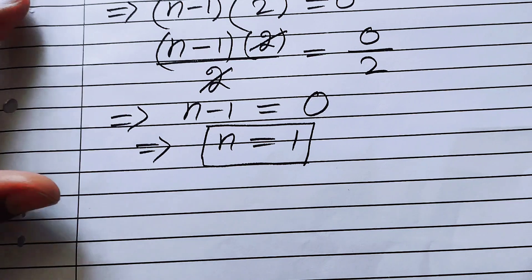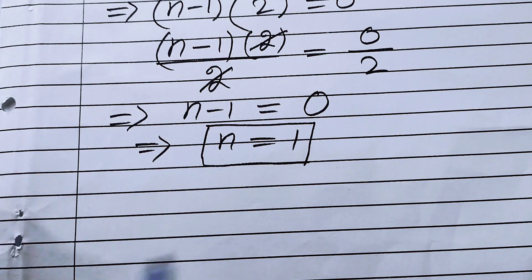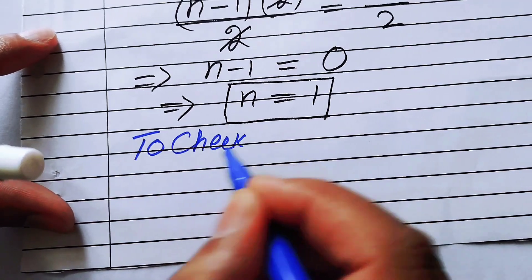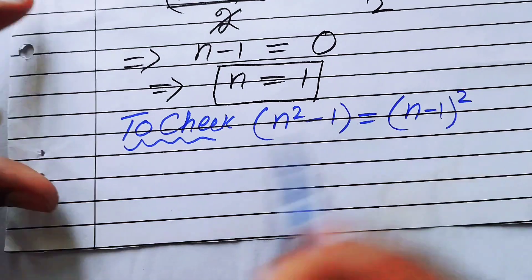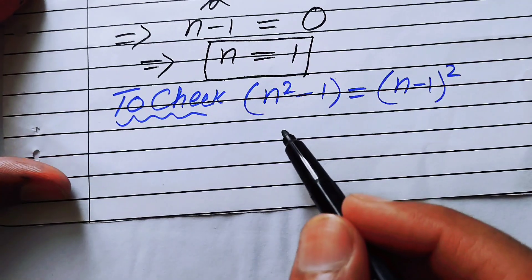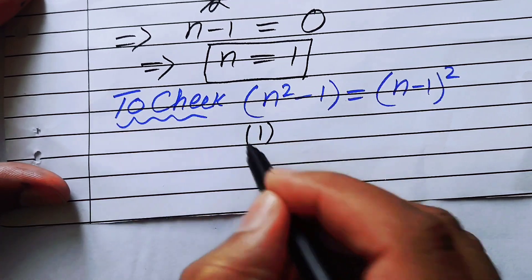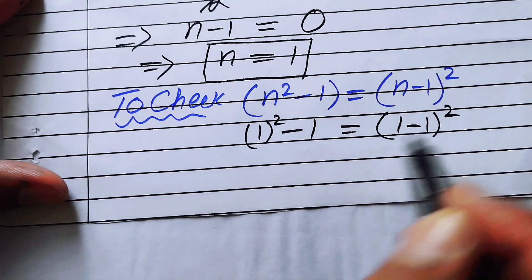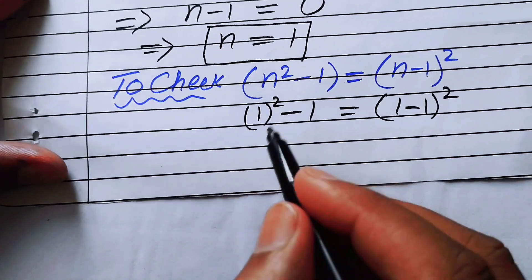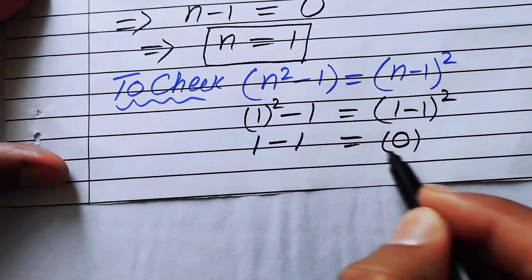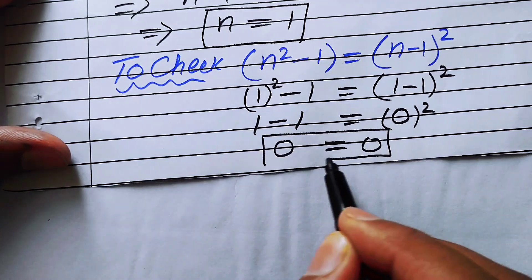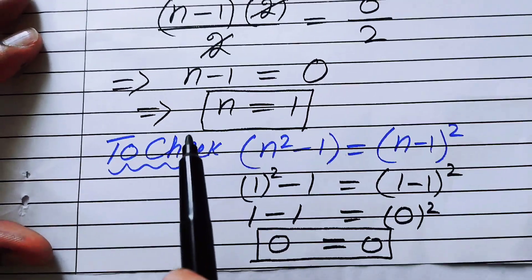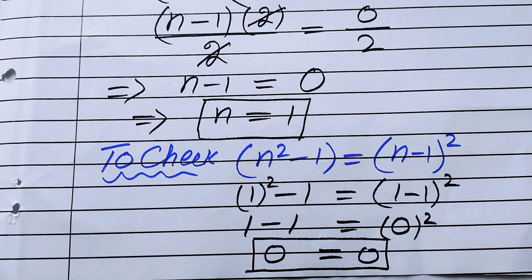This is our final answer. Now we verify: does n equals one satisfy the original equation n squared minus one equals n minus one whole squared? Substituting n equals one: one squared minus one equals one minus one whole squared, which gives one minus one equals zero squared, so zero equals zero. This confirms that n equals one is the only solution. Thank you so much for watching — please subscribe to my channel for more exciting videos.